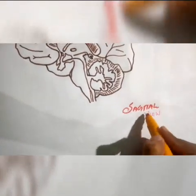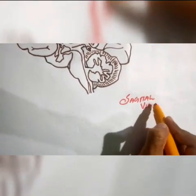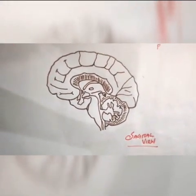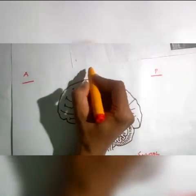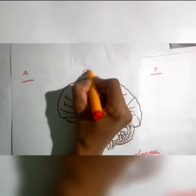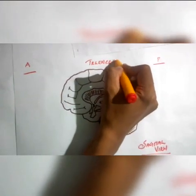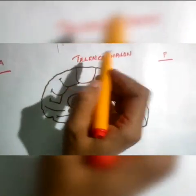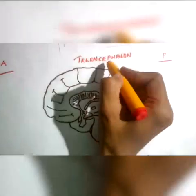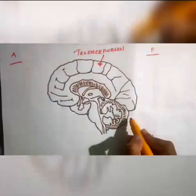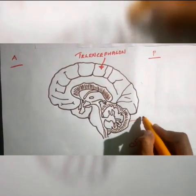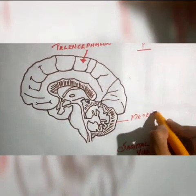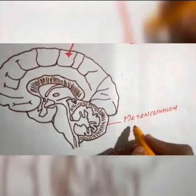Next, we have a look at the sagittal view. This is your cerebral cortex, or the telencephalon. Next, you have the cerebellum, or the metencephalon, together with the pons.